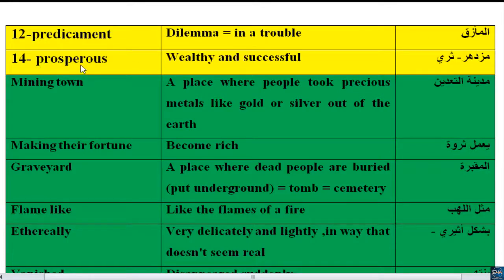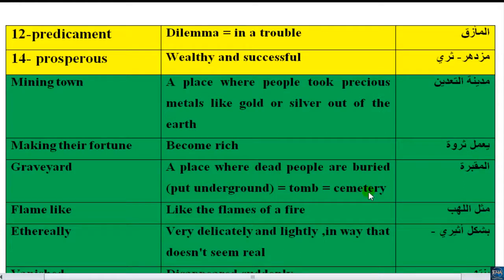Number 14: 'prosperous' — wealthy and successful. 'Mining town' — a place where people extracted precious metals. In American and British English: 'metals.' Like gold or silver out of the earth. 'Making their fortune' — to become rich. 'Graveyard' — a place where dead people are buried, put underground. Also 'tomb.' 'Cemetery' — cemetery, cemetery.